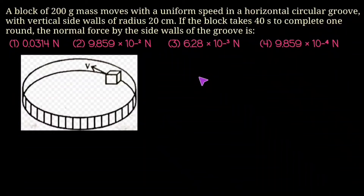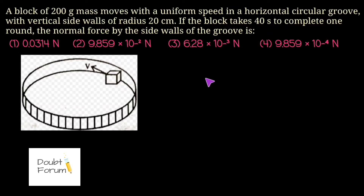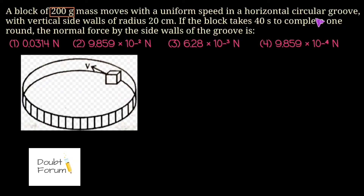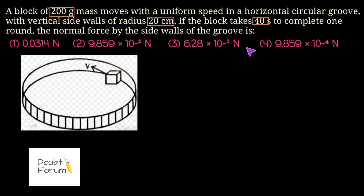Hello friends, welcome to DOUBT forum. This question is based on circular motion and we are asked to find the normal reaction on a block. The question is: a block of 200 gram mass moves with uniform speed in a horizontal circular groove with vertical sidewalls of radius 20 centimeters. If the block takes 40 seconds to complete one round, find the normal force by the sidewalls of the groove.